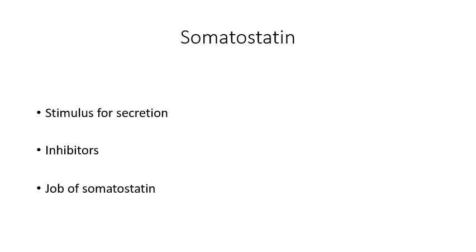Somatostatin is the master inhibitor — it will literally inhibit any hormone in the GI tract, whether it is gastrin, cholecystokinin, GIP, or secretin. Regarding its site of secretion, it is secreted from cells throughout the GI tract. The stimulus for its secretion is H+ ions, so wherever there is movement of H+ ions across the gut — whether in the duodenum or elsewhere — somatostatin is secreted. Its job is inhibition of all GI hormones.